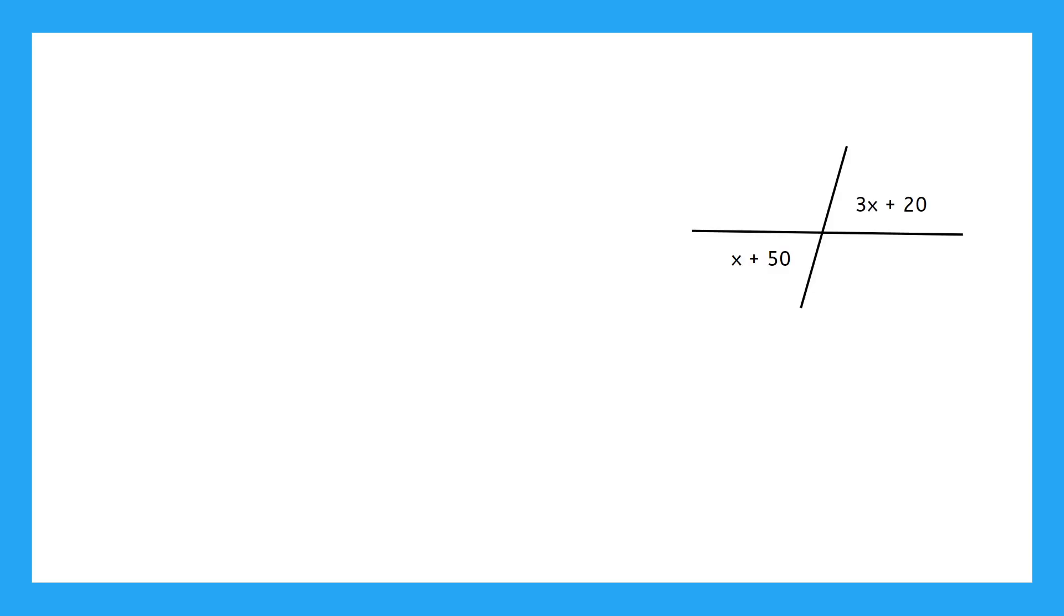Our first example has no words at all, yet we're still expected to know how to solve it using only the image. In geometry, you're going to learn that two angles across from each other at an intersection of two lines are called vertical angles, and that vertical angles are always the same. So since this image is showing us two vertical angles, we can set them equal to each other. 3x plus 20 is equal to x plus 50.